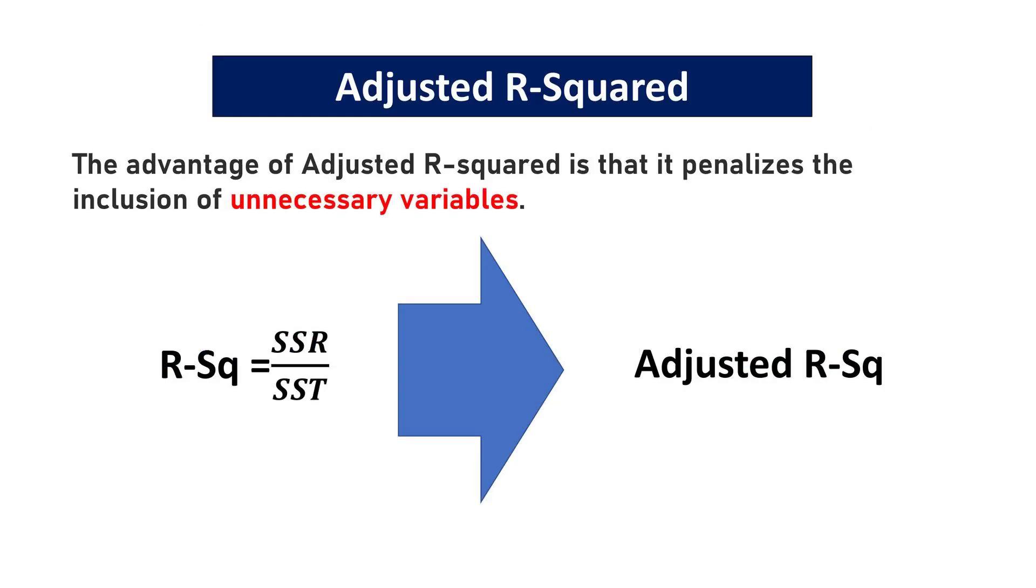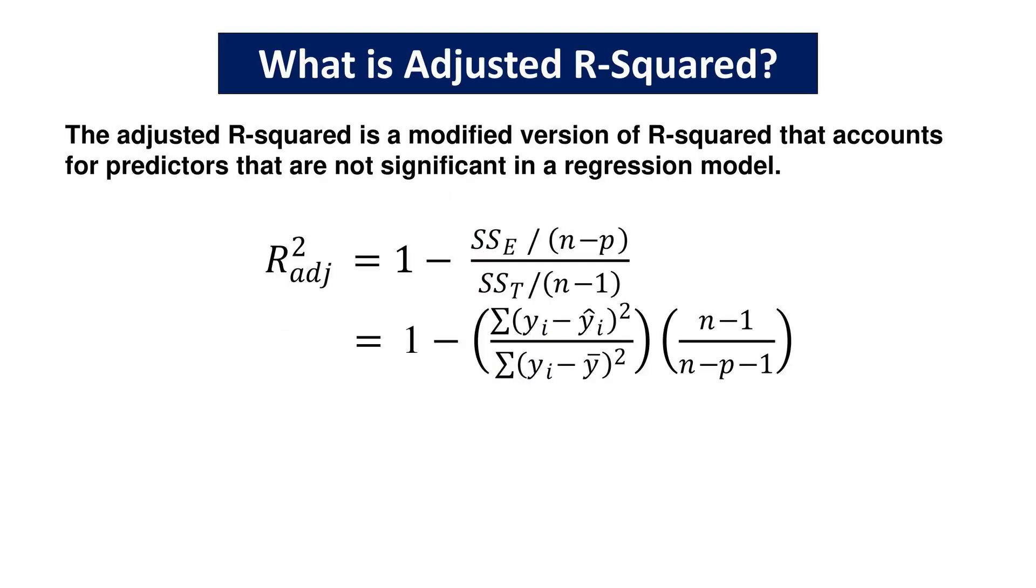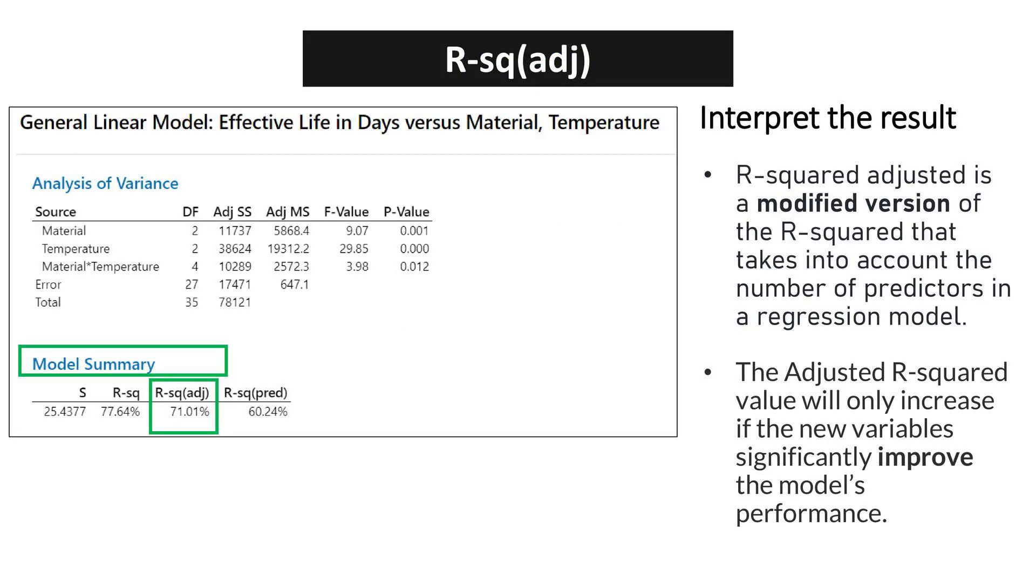The advantage of Adjusted R-squared is that it penalizes the inclusion of unnecessary variables. The Adjusted R-squared is a modified version of R-squared that accounts for predictors that are not significant in a regression model. The Adjusted R-squared value will only increase if the new variables significantly improve the model's performance.